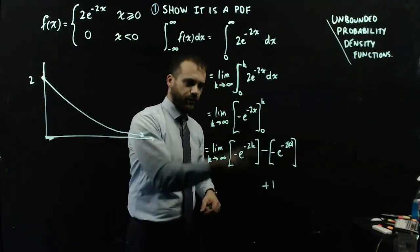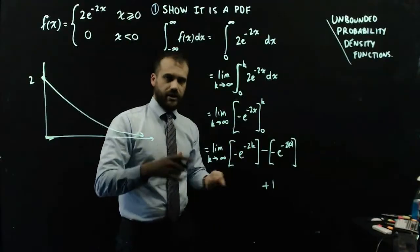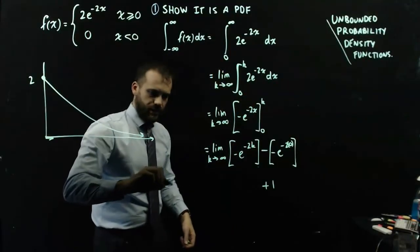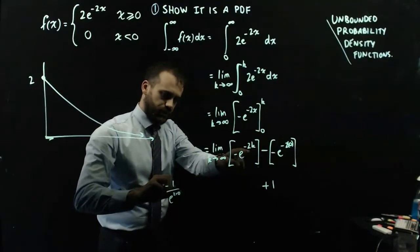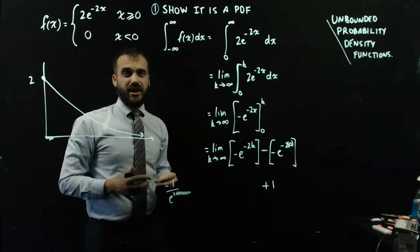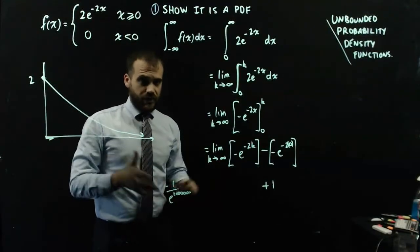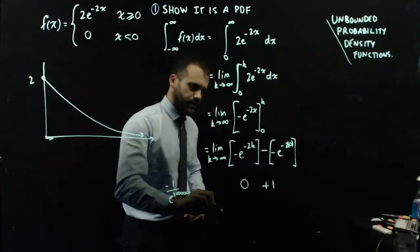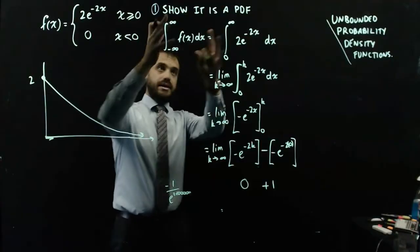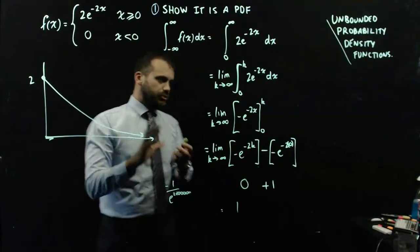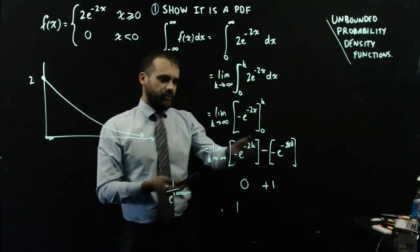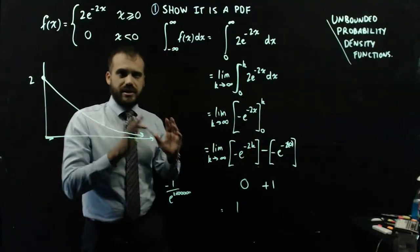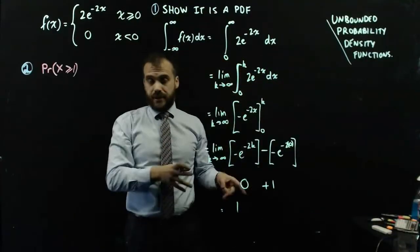What happens to the k term? If we put in a very large number, say a million: negative e to the negative 2 times a million is the same as negative 1 over e to the 2 million — that's 1 divided by an extremely large number, which is very close to 0. As k approaches infinity, that term equals 0. So 0 plus 1 is 1, showing this function is indeed a PDF.